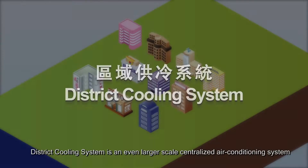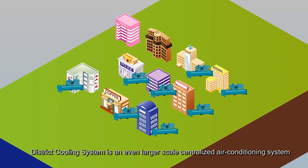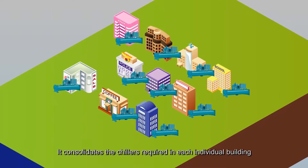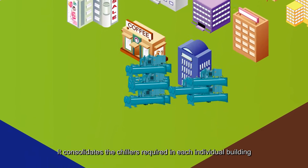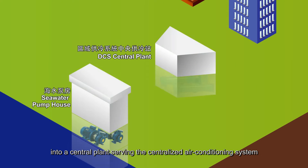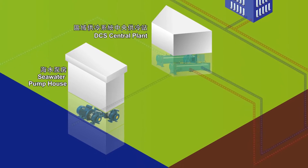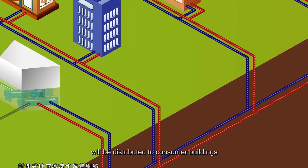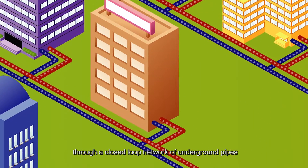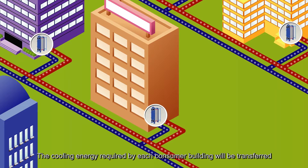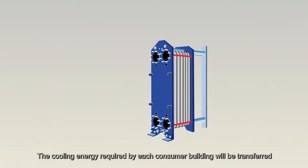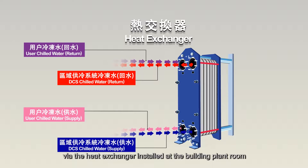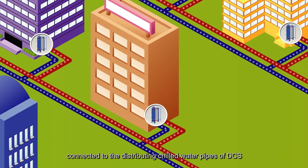What is a District Cooling System? A District Cooling System is an even larger scale centralized air conditioning system. It consolidates the chillers required in each individual building into a central plant serving the centralized air conditioning systems of buildings in the district. The chilled water produced at the central plant is distributed to consumer buildings through a closed loop network of underground pipes. The cooling energy required by each consumer building is transferred via a heat exchanger installed at the building plant room, connected to the distributing chilled water pipes of the DCS.